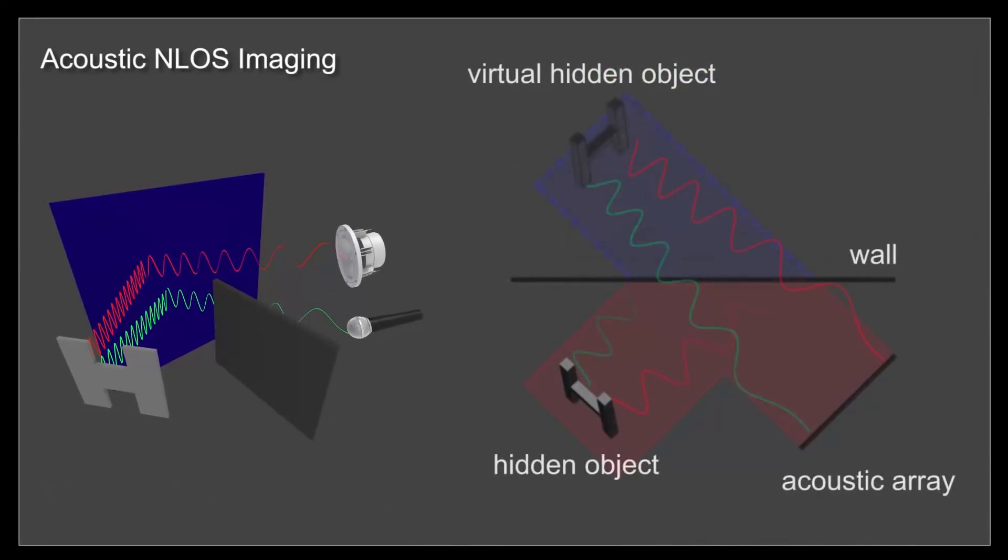The key motivation is that wall reflection properties are usually specular or mirror-like for acoustic waves, so they reveal the hidden scene more easily than optical setups. We therefore model the wall as a mirror, which allows us to image a virtual line-of-sight volume beyond the wall.